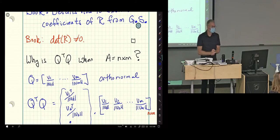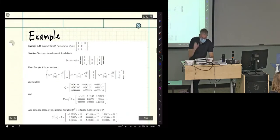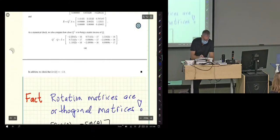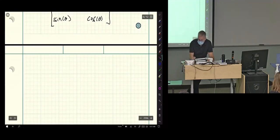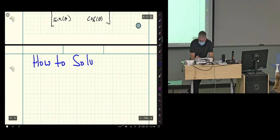Any questions on how to compute QR factorization? Straightforward? Gram Schmidt. Cool. Now, why are they useful? How to solve linear equations?